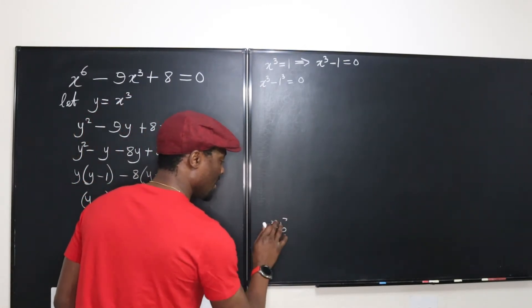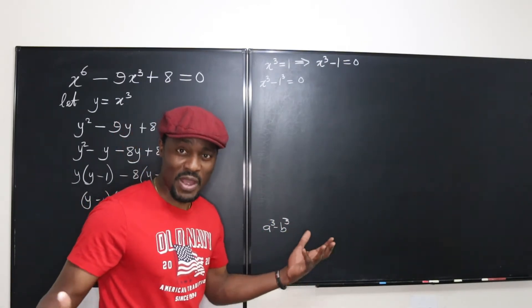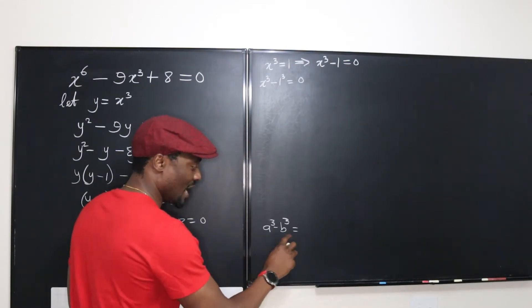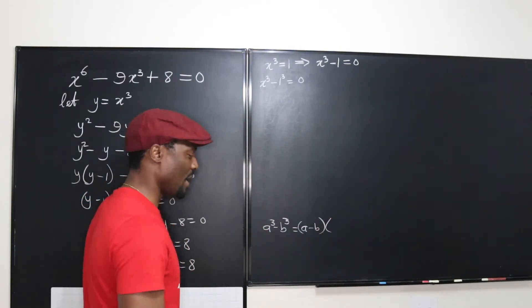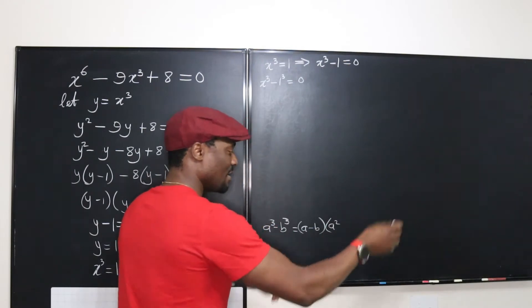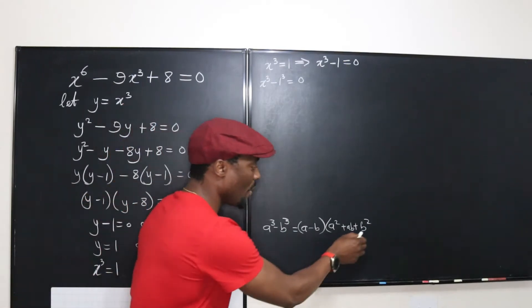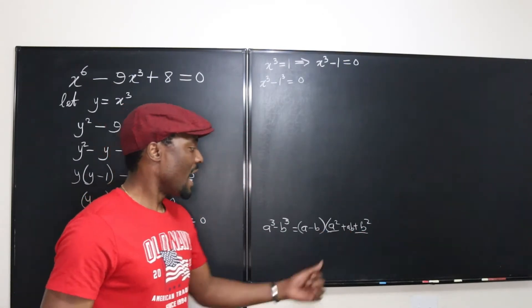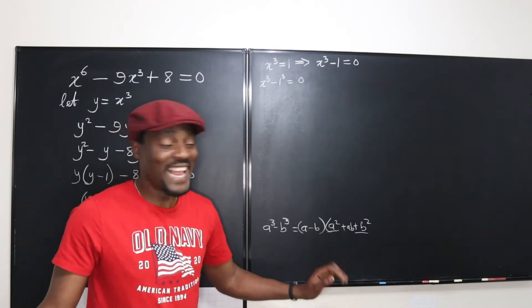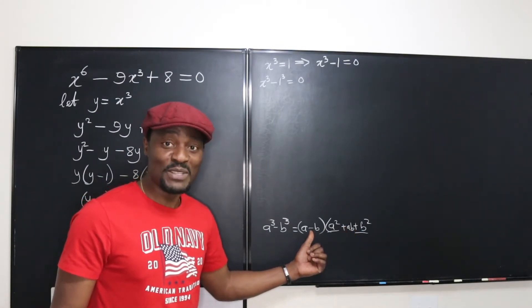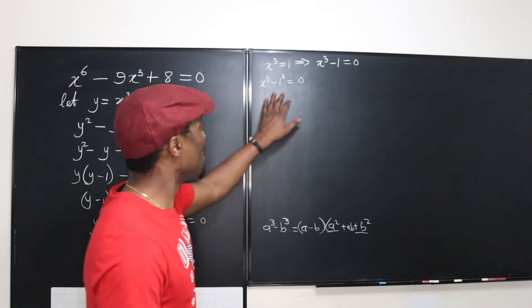A cubed minus b cubed — you have to memorize this as a math student. It equals (a minus b) times (a squared plus ab plus b squared). Note that a squared and b squared will always be positive, and the sign in the middle of the trinomial factor must be different from the sign between the two cube terms. So if you start with minus ab, this factor has to be plus. That's the structure — an easy way to remember it.